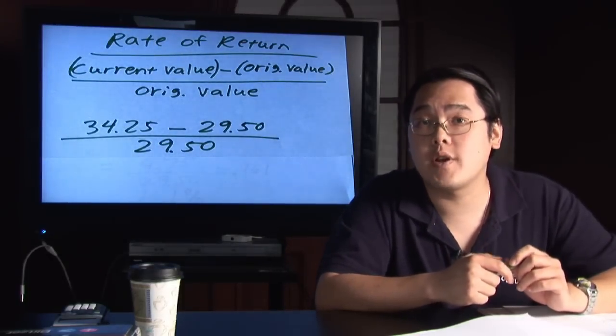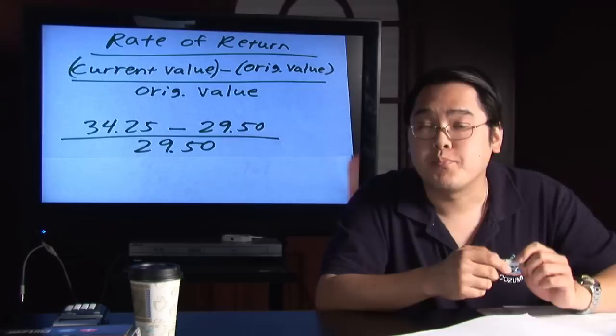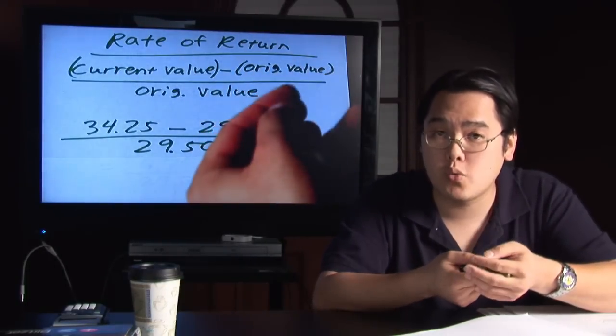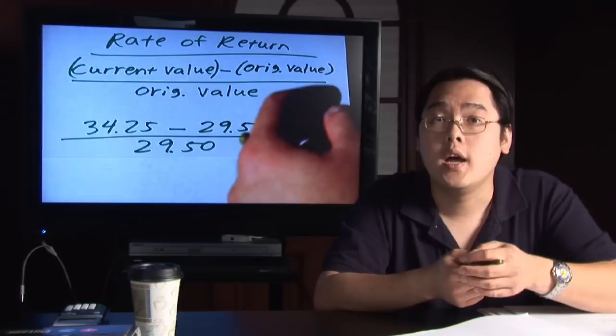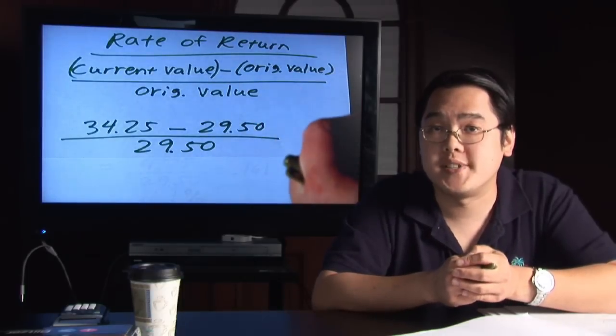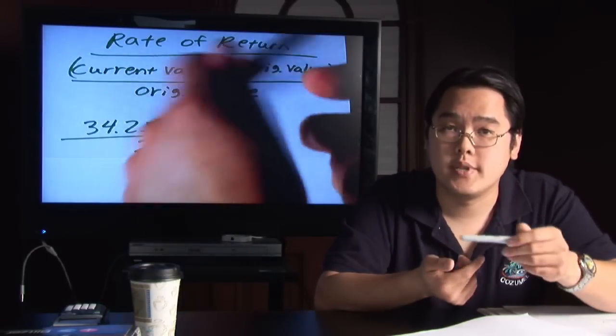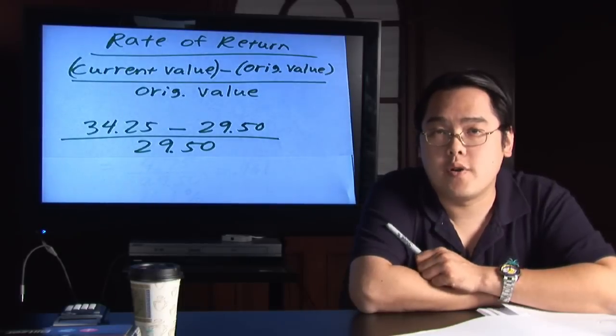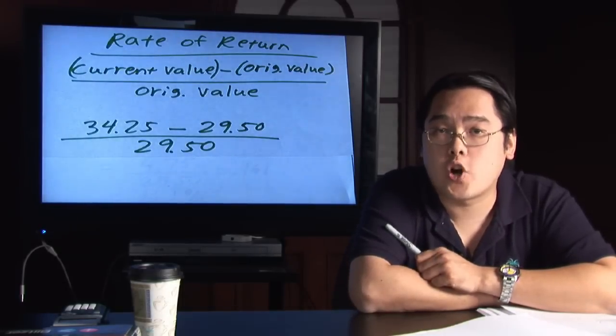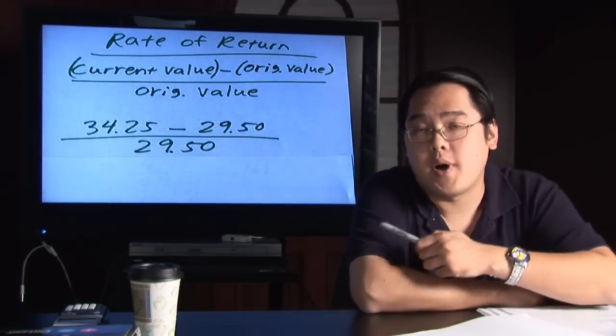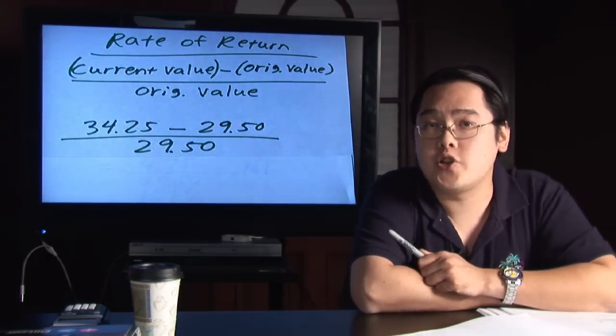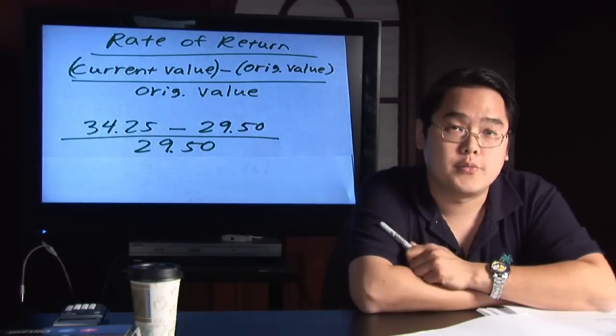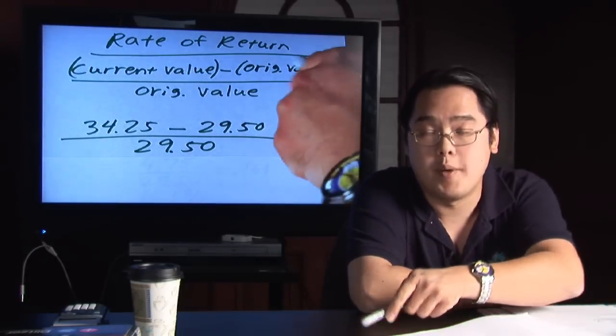It's actually a very straightforward formula in that you need two things. Number one, you need your current value, how much your investments are worth, individually or collectively, and how much you purchased the investments at. The formula goes something like this: You take the current value of your investment, how much your stock is worth currently, subtract it by the original value, how much you purchased it at, divided by the original value, which is what you had again up in the numerator.